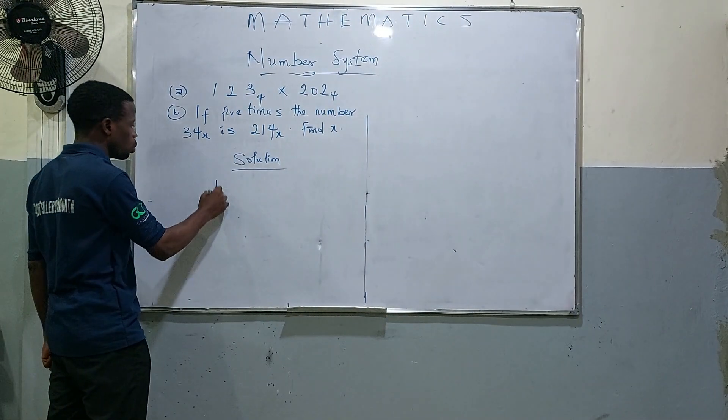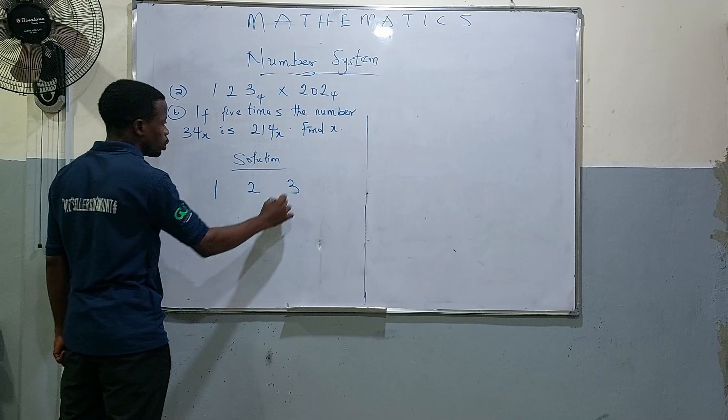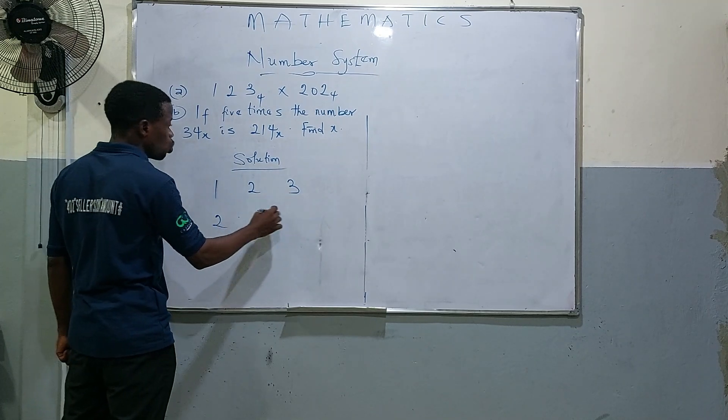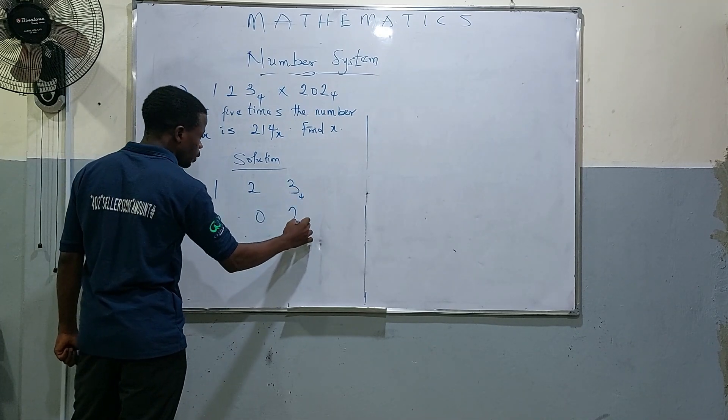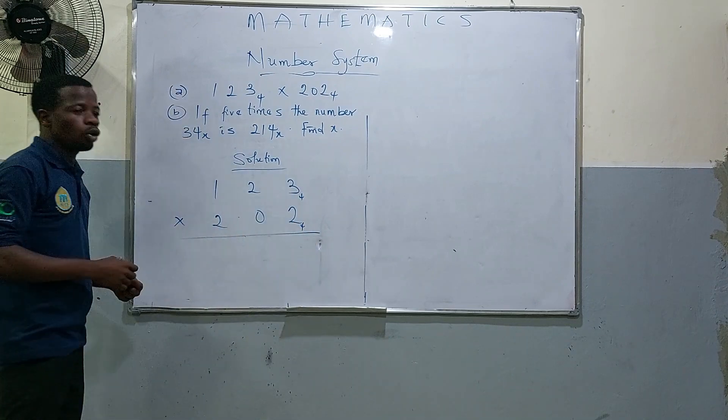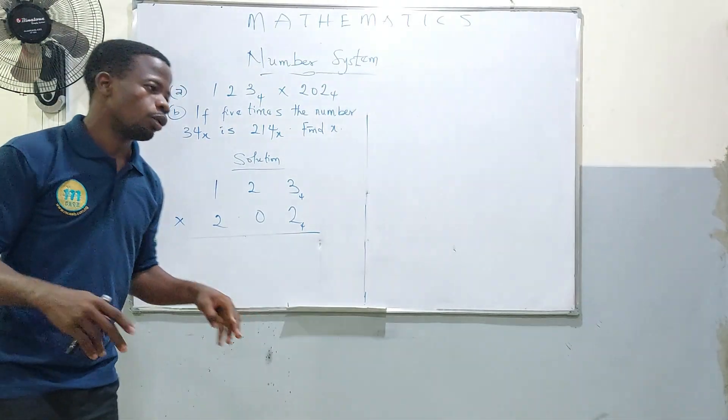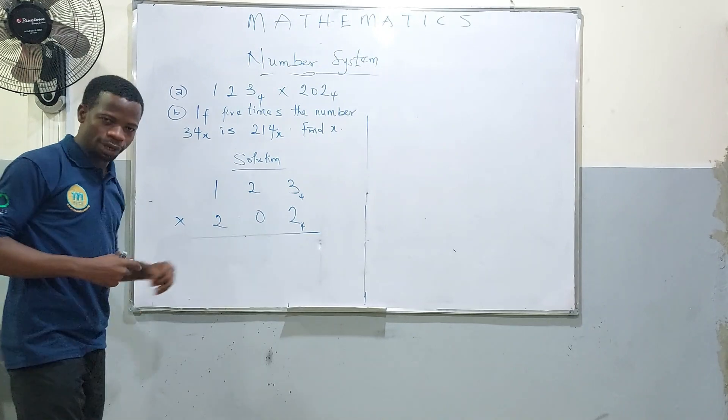So let's go 1, 2, 3 times 2, 0, 2 base 4. How do we move? It's a conventional multiplication, but you have to do that in that base.